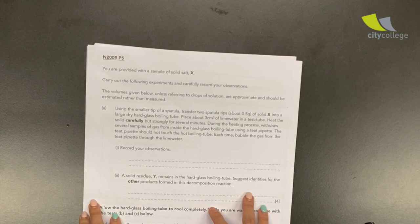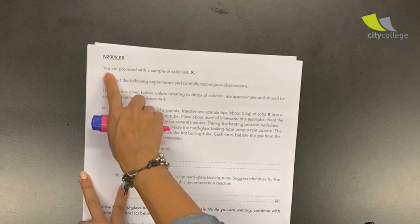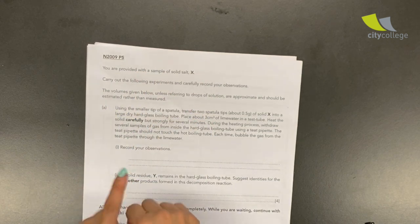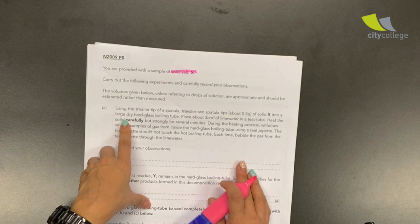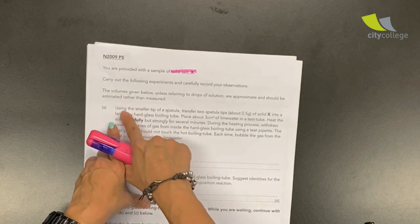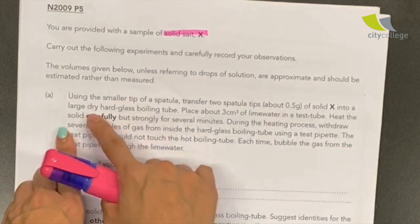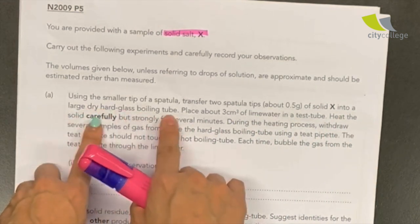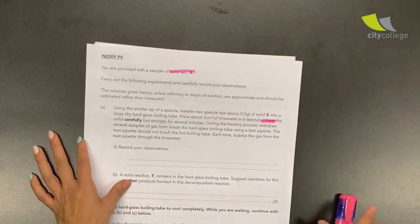Let's see starting from 2009. In the 2009 paper they say you are provided with a sample of solid X. They also say heating, where they say that solid X, place them into a large dry hot glass boiling tube and then heat the solid carefully. Keyword: heat.